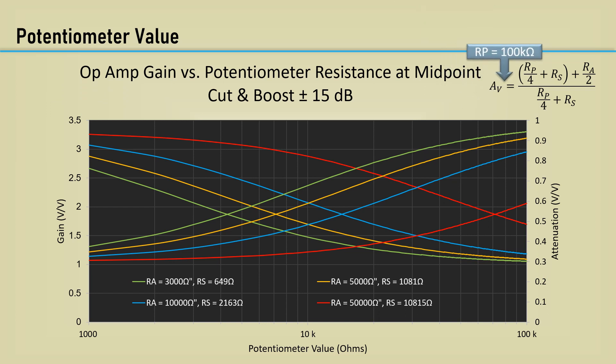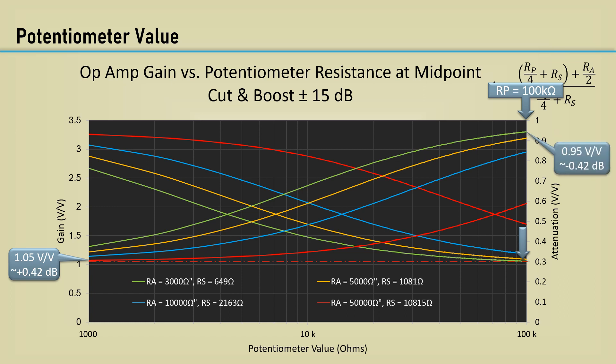Now let's look at a 100K pot and an RA value of 3,000 ohms. Following the green gain line over to the 100K position, then back to the gain axis, shows the gain is 1.05. Now the attenuation is 0.95. While this still works, using high resistances in audio circuits adds noise, and that should be avoided. Let's look at the plot for RA equals 10K in blue.